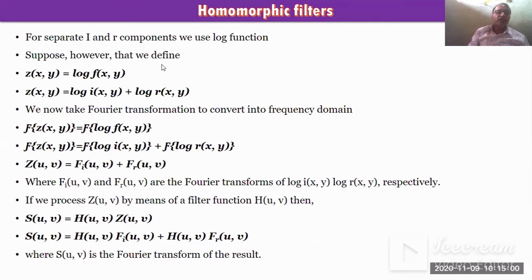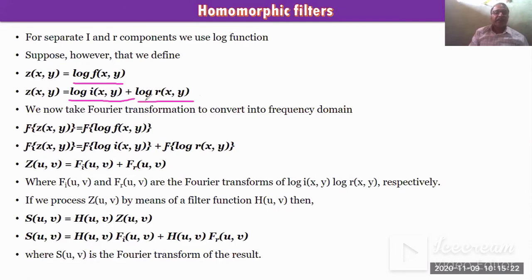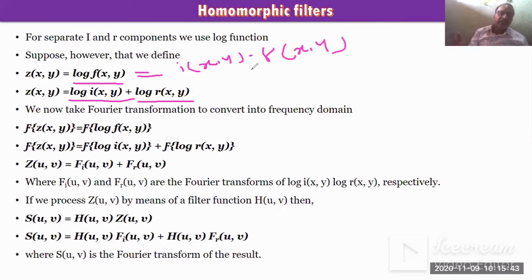For separating the illuminance and reflection components we use the log function. z(x,y) = log(f(x,y)), which allows us to separate the terms: log(i(x,y)) + log(r(x,y)). So using the log, we can separate these two components.